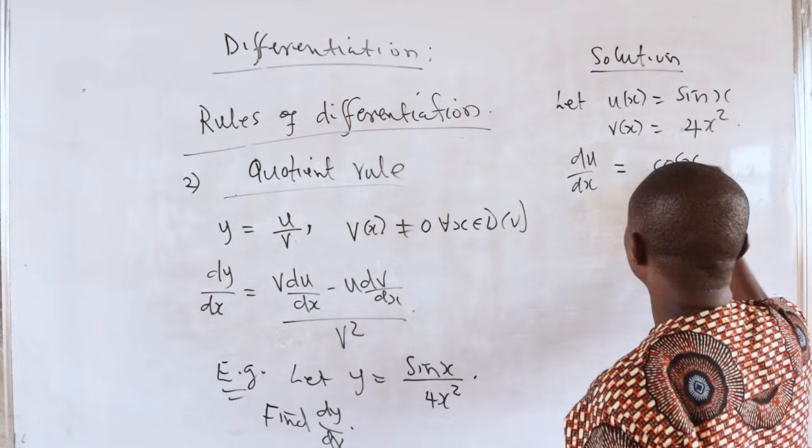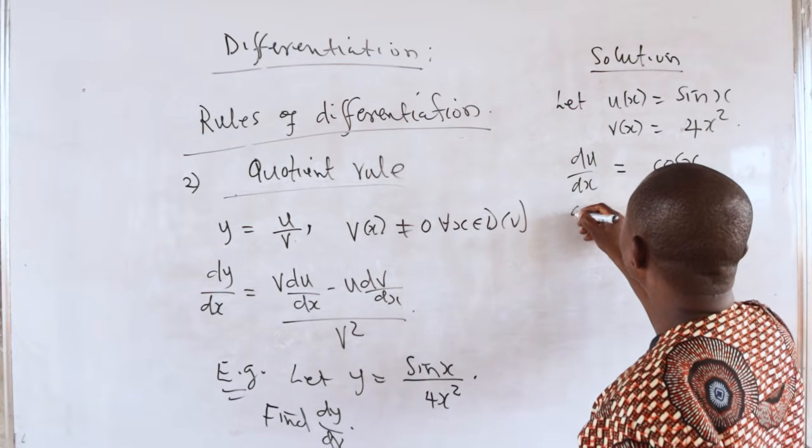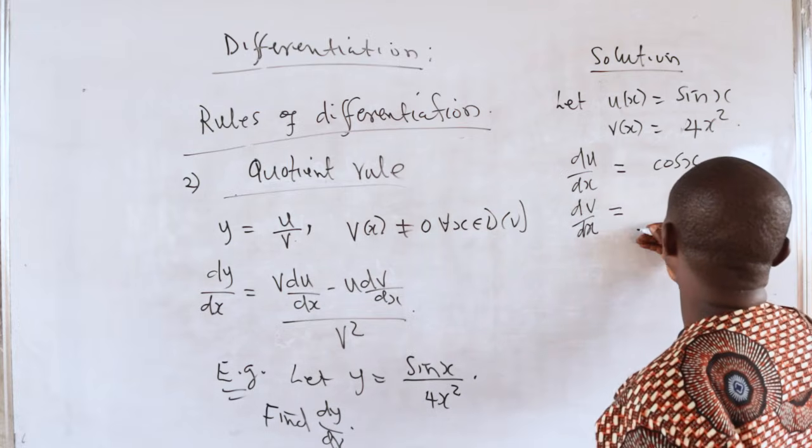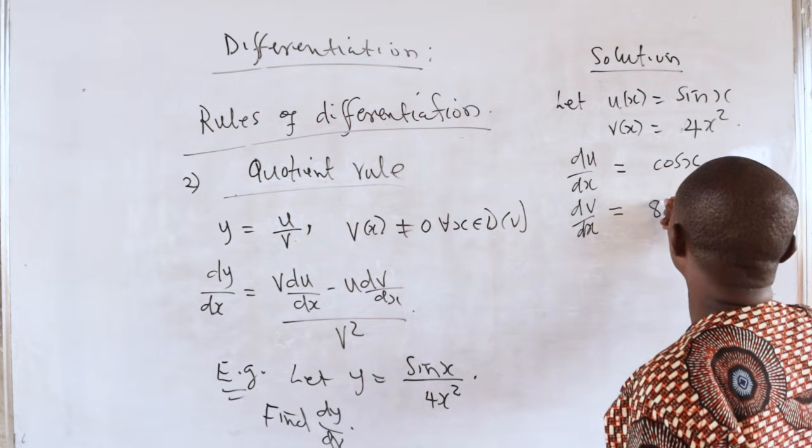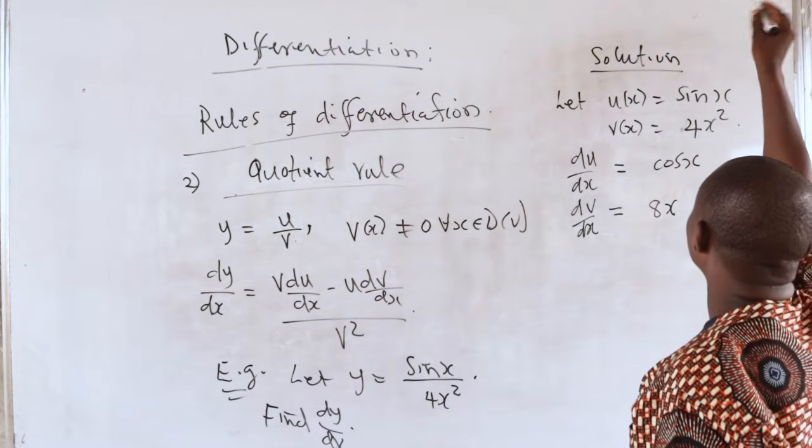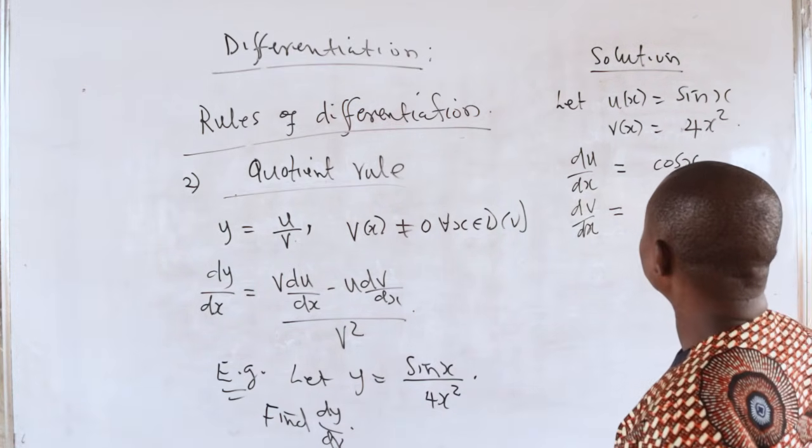This is cos x. We can also differentiate v with respect to x with ease again. This is 8x. If you apply the formula I gave you before.